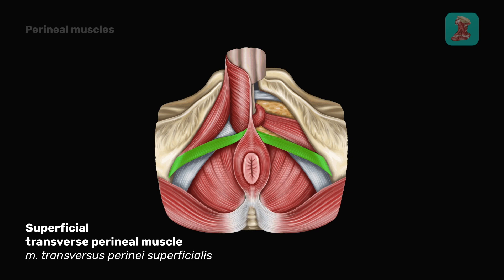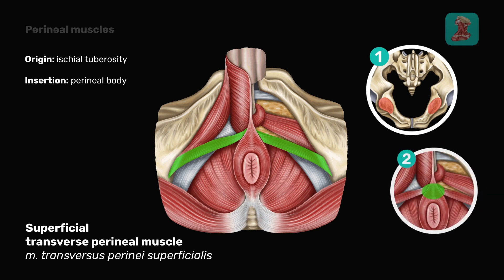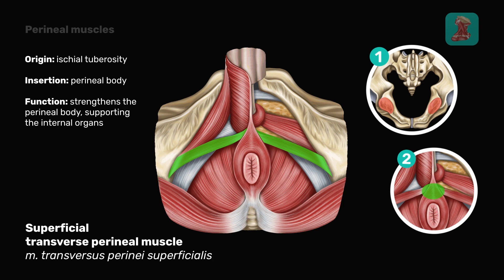The superficial transverse perineal muscle originates from the ischial tuberosity and inserts into the perineal body. Its function is to strengthen the perineal body, supporting the internal organs.